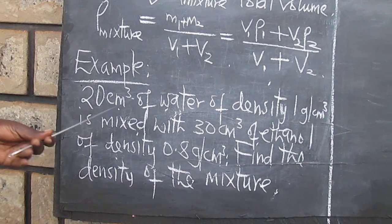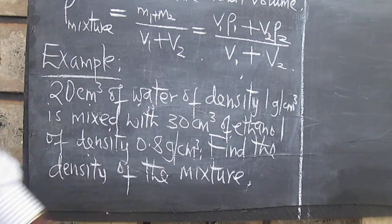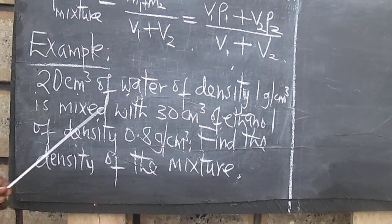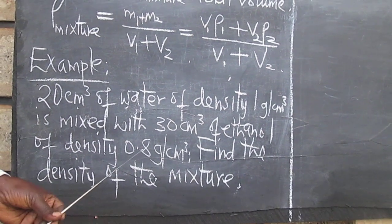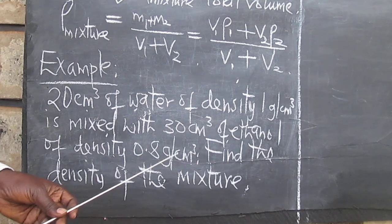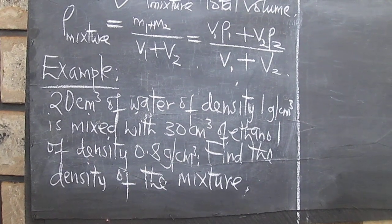So, 20 cubic centimetre of water of density 1 gram per cubic centimetre is mixed with that cubic centimetre of ethanol of density 0.8 gram per cubic centimetre. Find the density of the mixture.